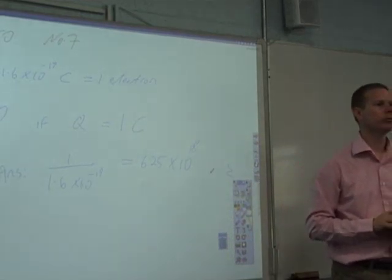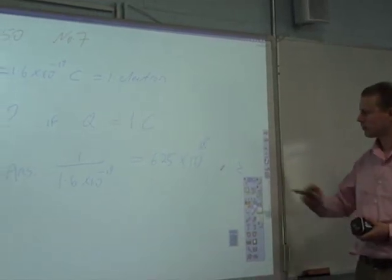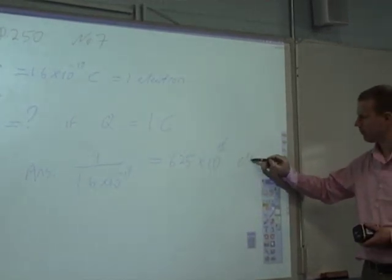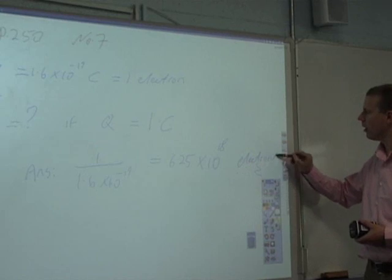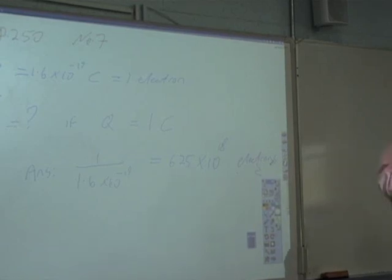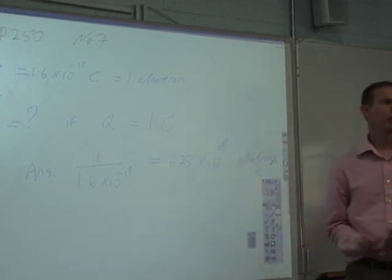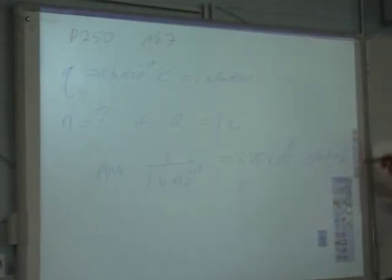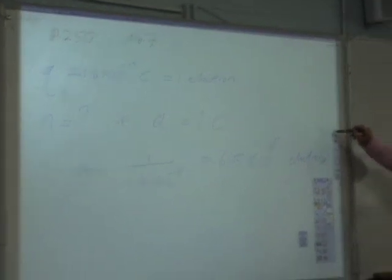Answer — units? Electrons. The question is how many electrons would you need, so putting the unit down just prompts the notion of what you are measuring and calculating. So there are that many electrons in one Coulomb. Next question — is that okay? Can I move on? Next page. Going once, going twice.